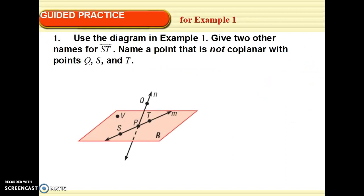Use the diagram in example one. Give two other names for line ST. Once again, it's hard to see, but these actually do have little arrows so that you know it's a line, line ST. Two other names for line ST. Who can tell me a name for line ST? Line M. Good. What else? Line TS. You could even get a little bit creative and say line SP or line PS or line PT or TP or TS, ST, like any combination of these three you can do.